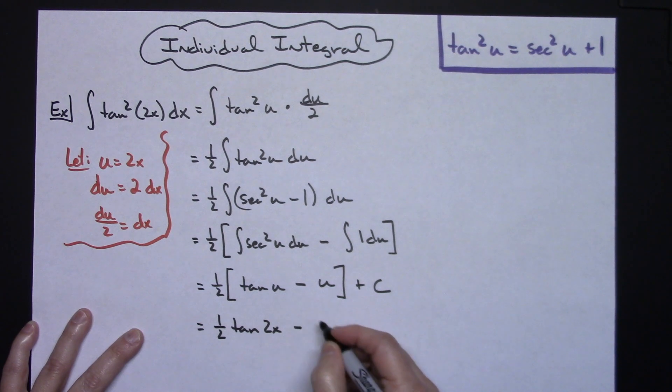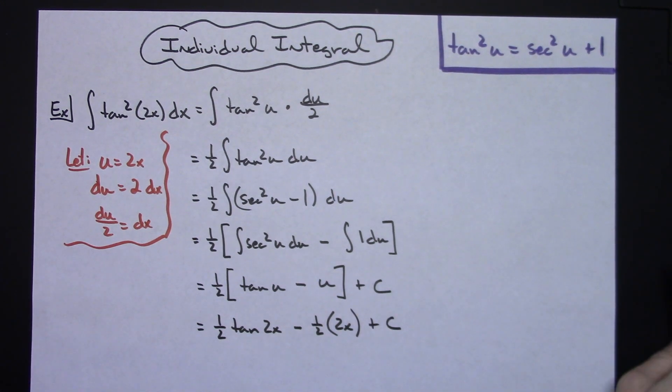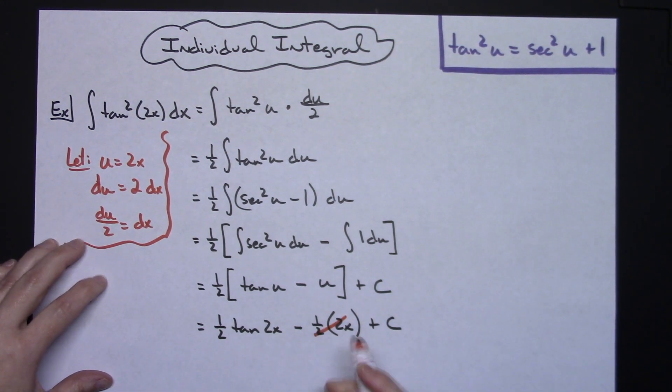Minus, again replacing and distributing the one-half, replacing the u would be 2x. One last step there to simplify that, make that look a little bit better. One-half times that 2 is just going to be a 1.